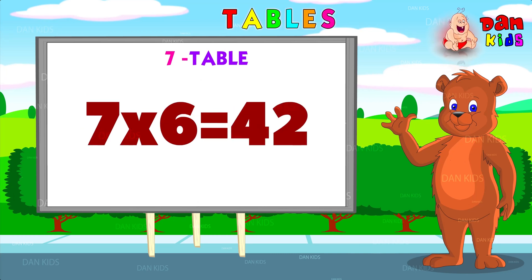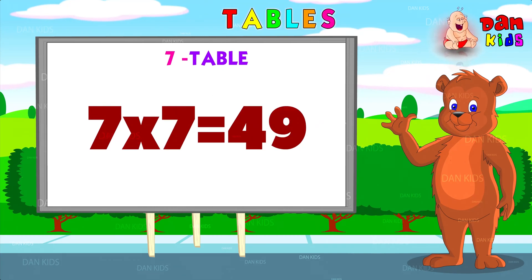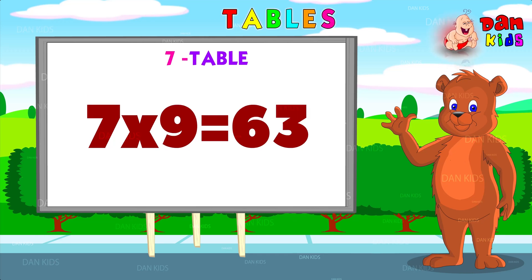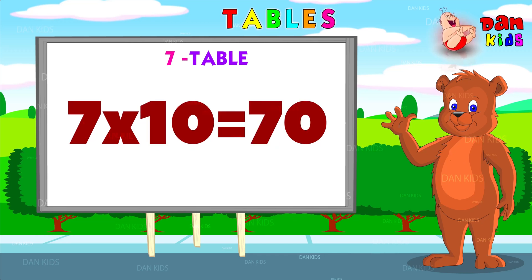Seven sixes are forty-two. Seven sevens are forty-nine. Seven eights are fifty-six. Seven nines are sixty-three. Seven tens are seventy.